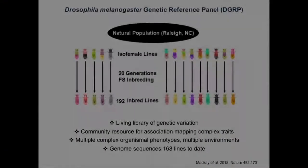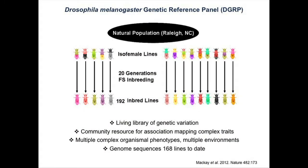So I have, in the past, led a large international collaboration with Baylor College of Medicine to fully sequence about 200 lines of fruit flies. Each of these lines is genetically identical within a line but completely different from all the other lines. These were developed from flies caught at Raleigh's Farmer's Market, and they are a living library of genetic variation. There are 4 million genetic variants in these 200 lines of flies.